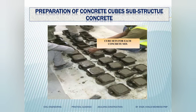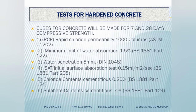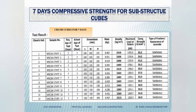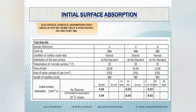When we start casting concrete, we prepare cubes for each concrete structure — whether it is a raft, columns, beams, or slab. Sets of cubes are marked with an identification number and placed in water tanks for a certain period until they go for crushing. The first test for hardened concrete is the seven-day compressive strength, which should not be less than 75 percent of its design compressive value. After seven days, cubes are sent to the lab. Then cubes are sent for 28-day testing, which should not be less than 100 percent of the design compressive strength.